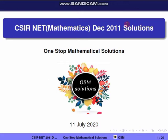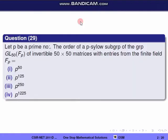Hi everyone, welcome to Unstop Mathematical Solution. Today we are going to solve CSIR NET Mathematics December 2011 question paper. In this video we have only dealt with the abstract algebra part. First question, Question 29: Let p be a prime number. The order of a p-Sylow subgroup of the group GL(50, Fp) of invertible 50×50 matrices with entries from the finite field Fp equals?